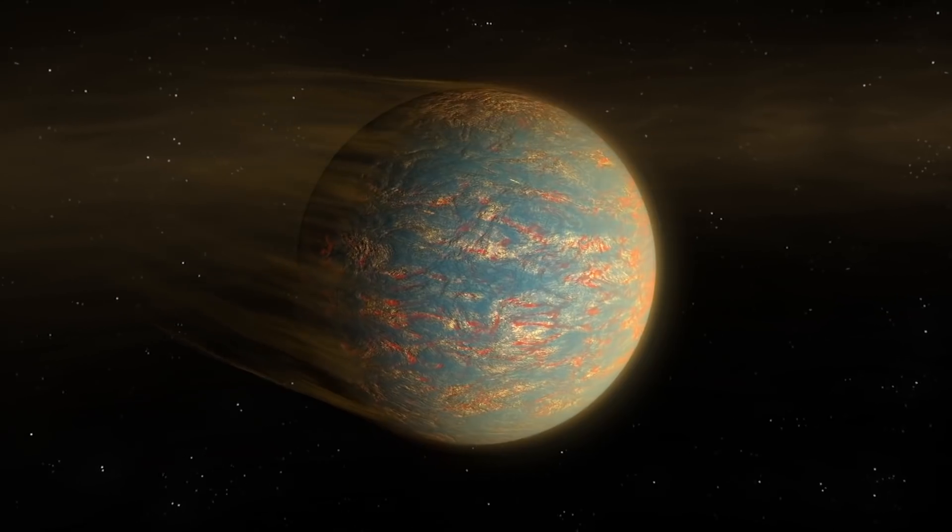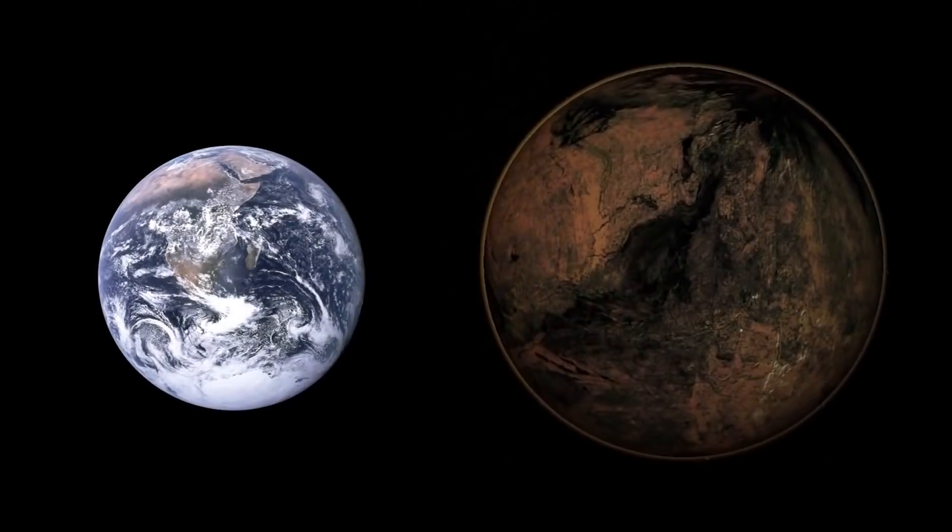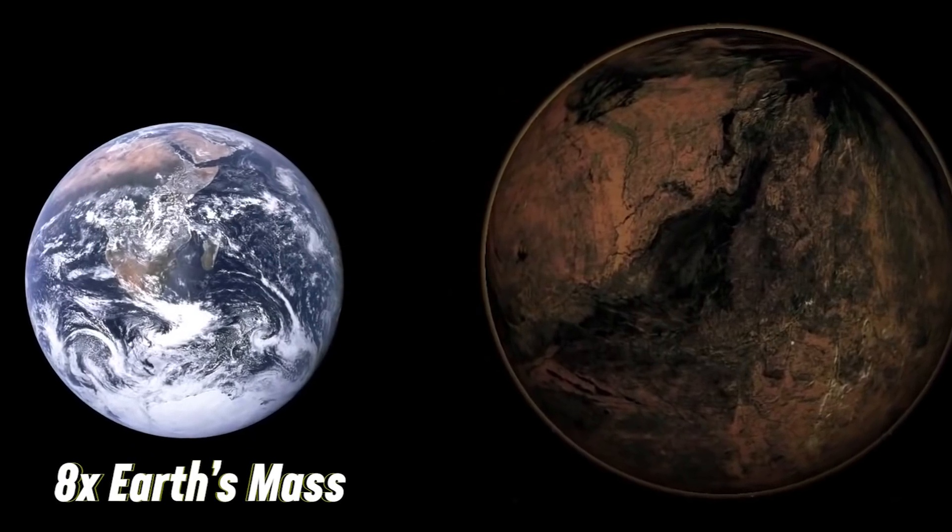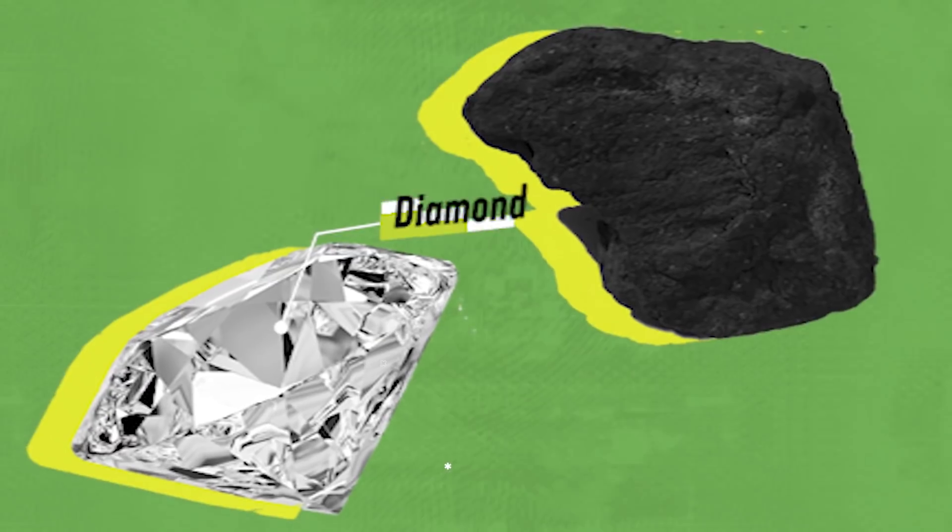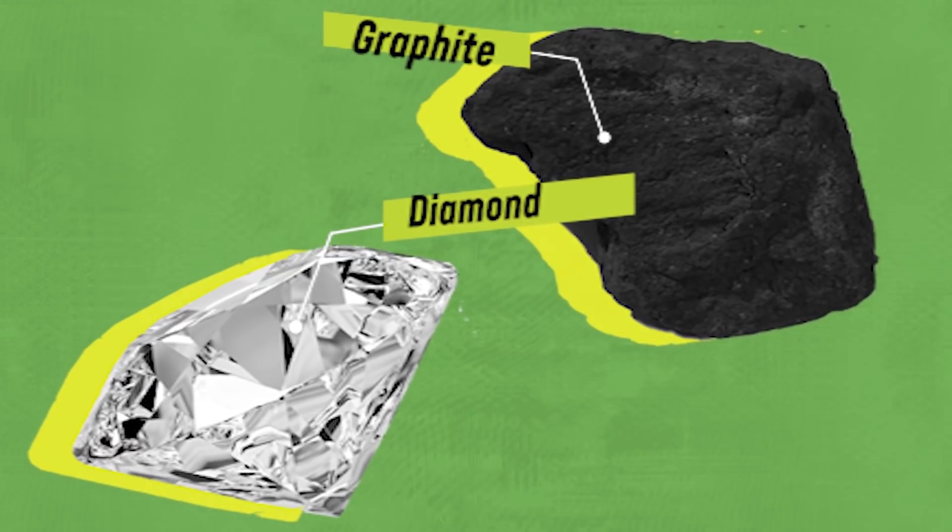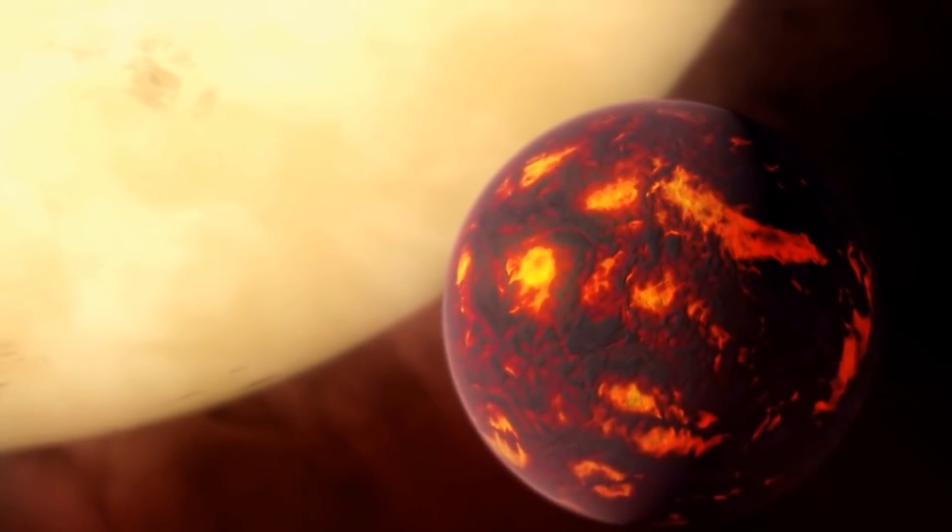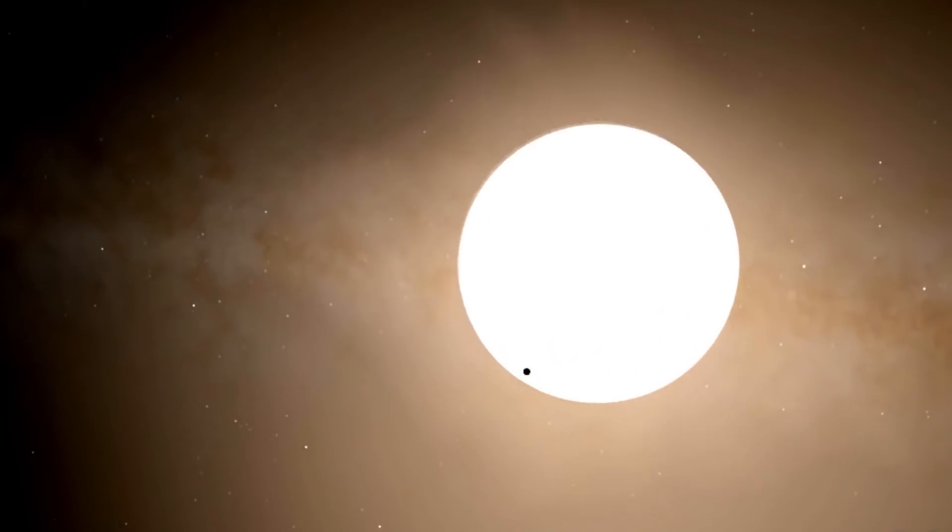55 Cancri e is also known as the Diamond Planet. It's easy to understand why when you consider this amazing planet, which has about eight times Earth's mass. It earned this moniker because scientists suggested that it was composed of diamonds and graphite. While the theory is not as popular today, the planet still remains an interesting object of study due to its high density and its very close proximity to its parent star.